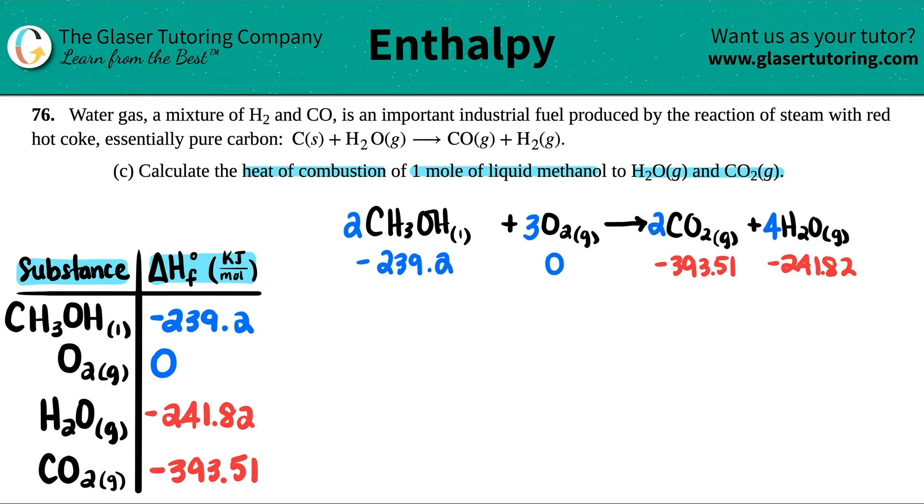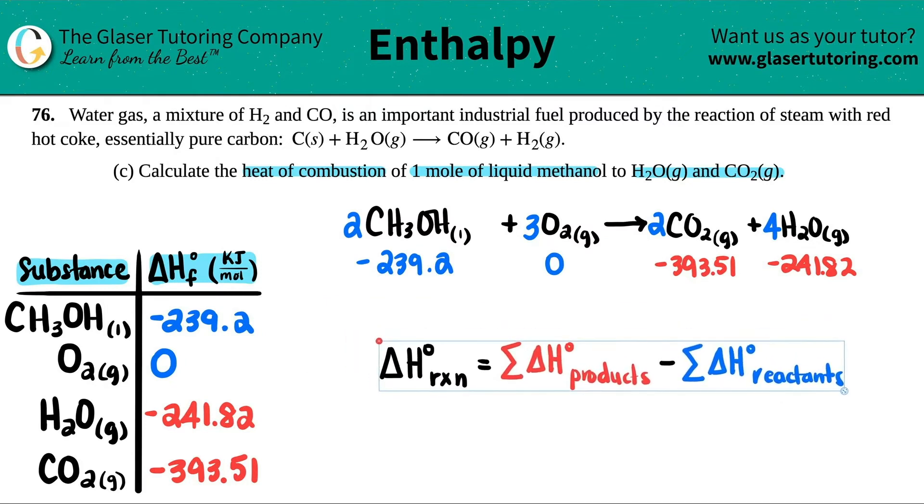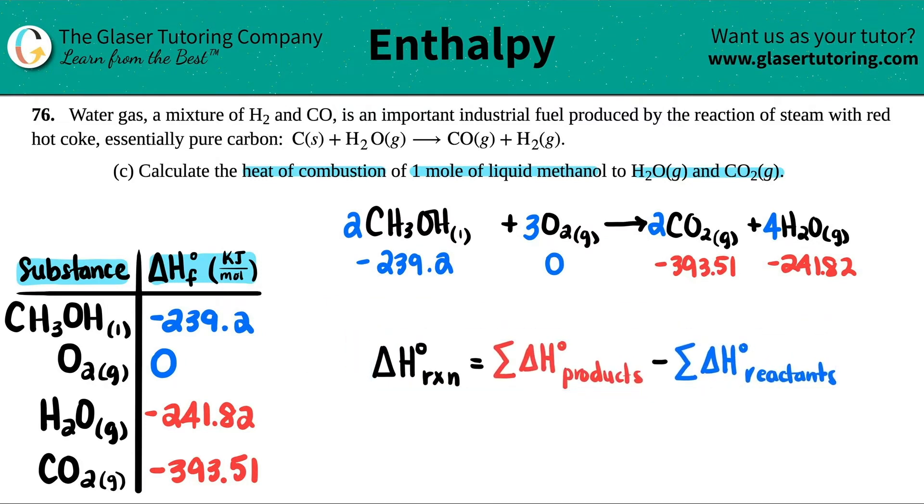Make sure you get these numbers from the back of the textbook—it's in the appendix values. We need to find the delta H values because they said heat. Delta H is enthalpy, it's how much heat is being produced. Just make sure you're picking the right state—this is H2O gas and not liquid, so be careful. Now, how do we find the delta H for the whole reaction? We use the formula: delta H of the reaction equals the sum of the products minus the sum of the reactants.